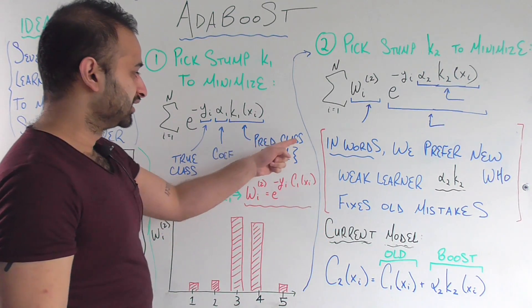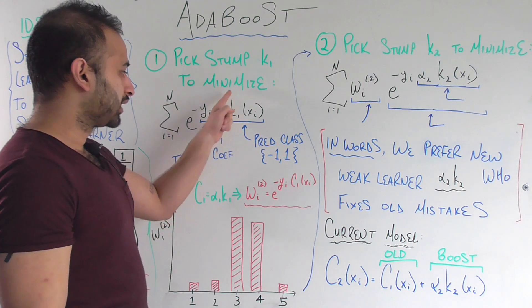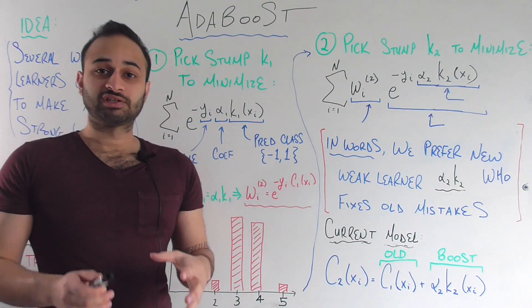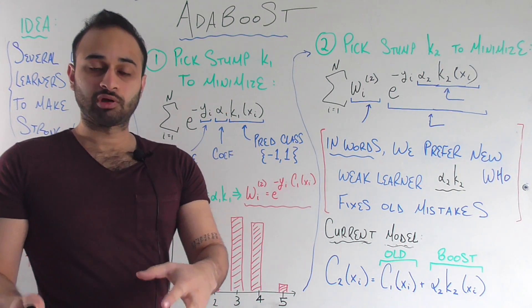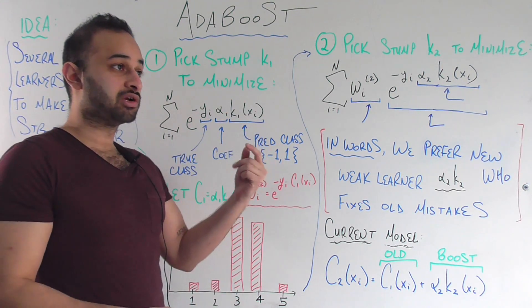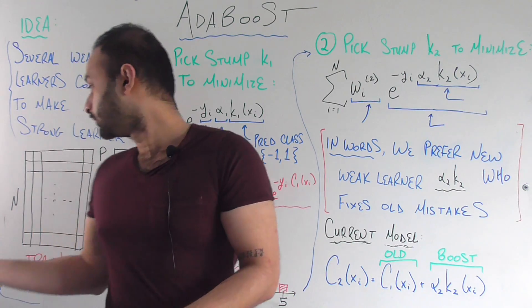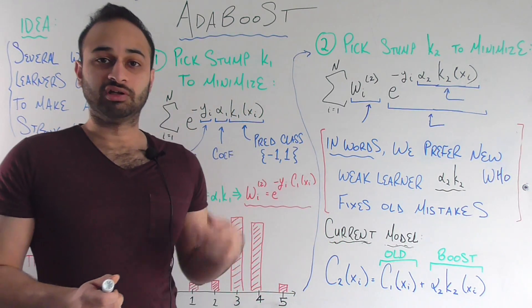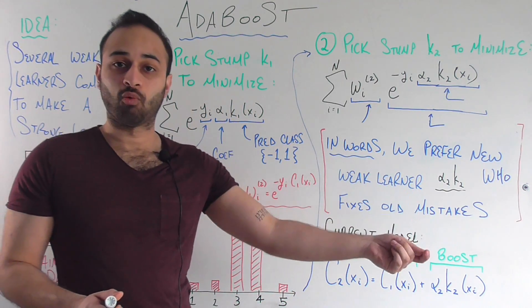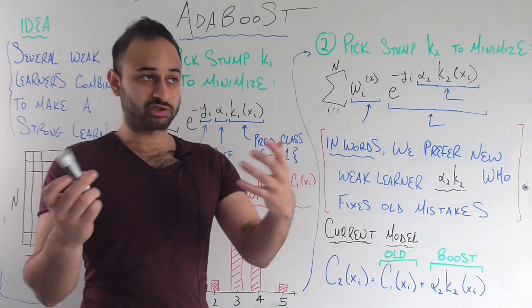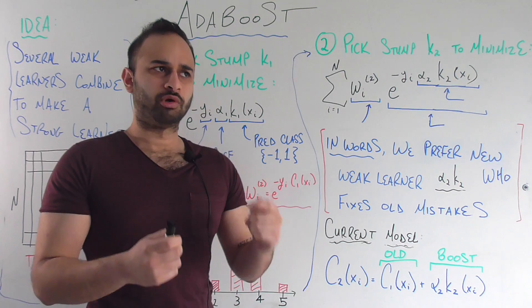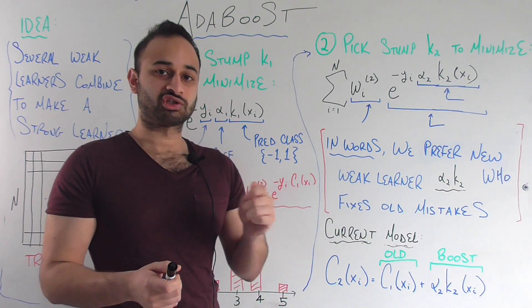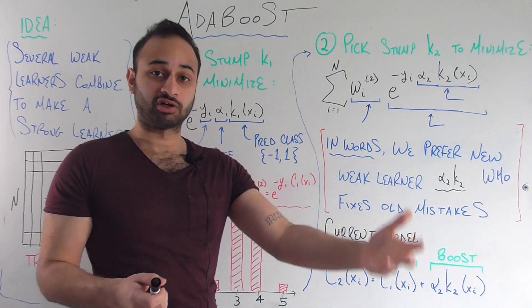And the next thing is the predicted class. So k one here is the choice of decision stump. So for every single predictor we can think of — any of these p predictors — we're going to have a different choice for k one. And the question we're trying to answer right now is which predictor should I choose? Which decision stump should I build first?